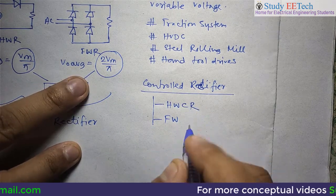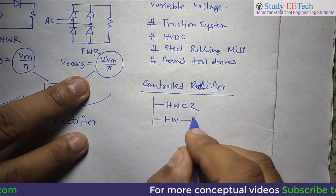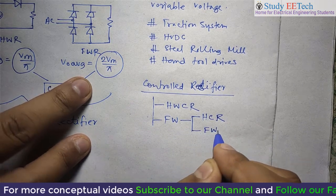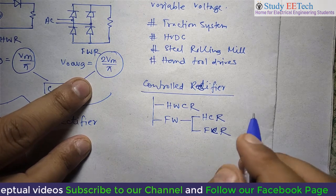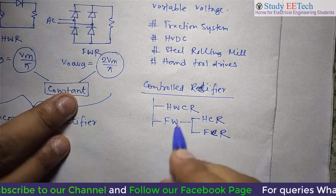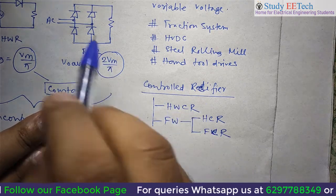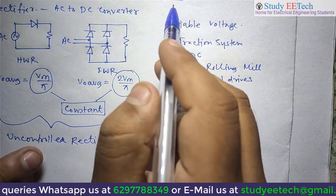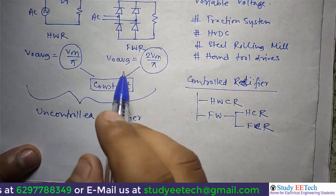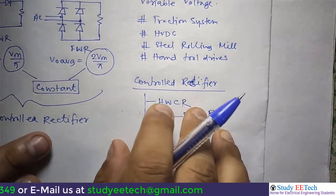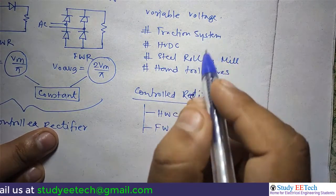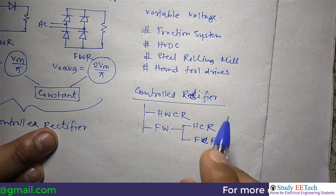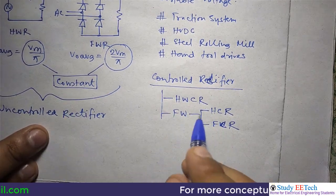It is called the half-wave controlled rectifier. And in the case of full wave, one is called the half-controlled rectifier and another is called the full-controlled rectifier. We will study these circuits in detail. But here I am just telling you what phase controlled rectifiers are and why we need them. The reason is that from the uncontrolled rectifier we get constant voltage, but we need variable voltage, and this controlled rectifier can provide us variable voltage.